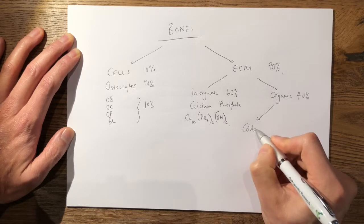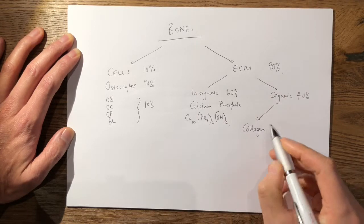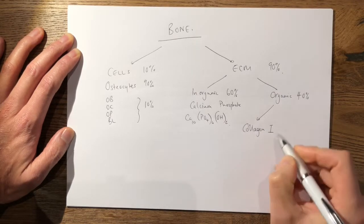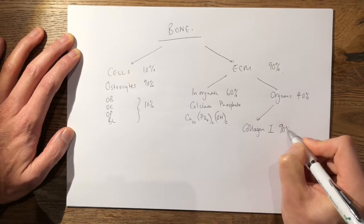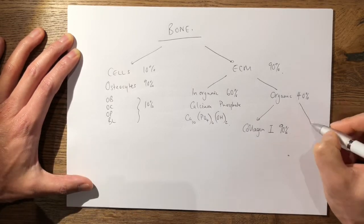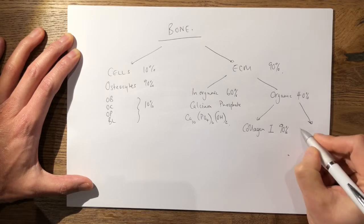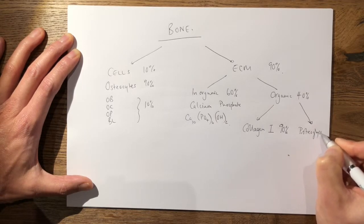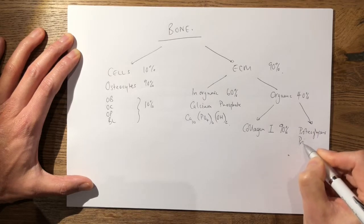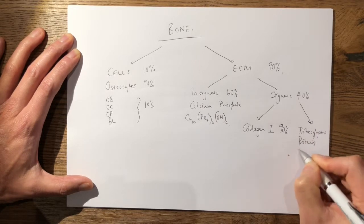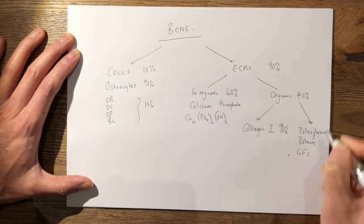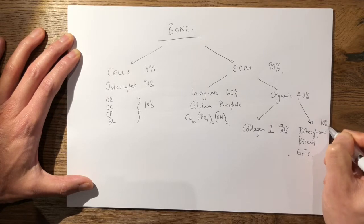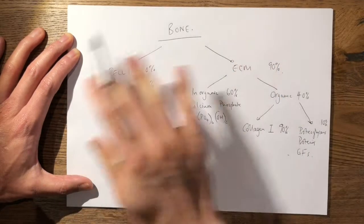Your organic matrix is made up of collagen—we know that in bone it's mainly type one collagen, approximately 90 percent—and the other 10 percent is made up of proteoglycans, other proteins, and some growth factors.